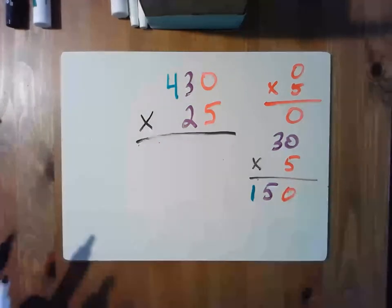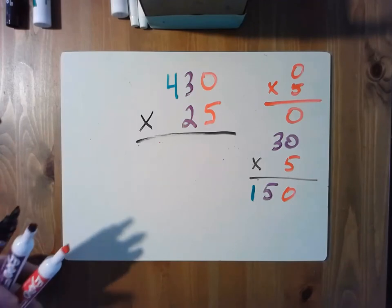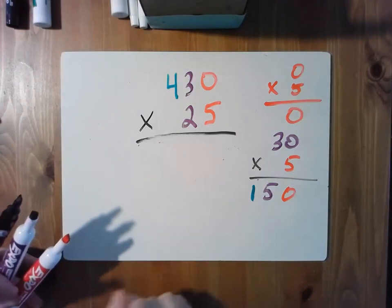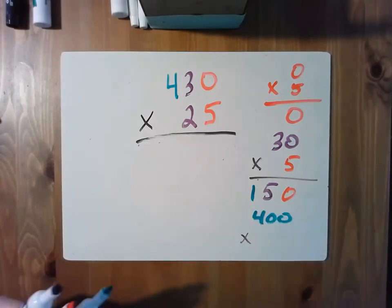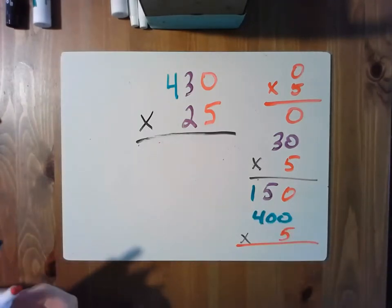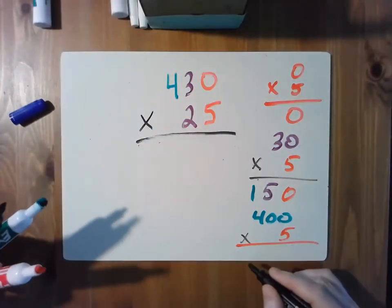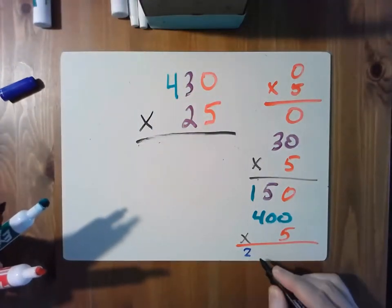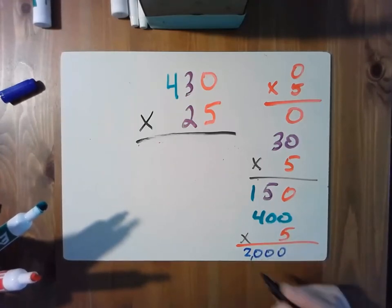Trying to stick with my colors here. I have colored markers that I'm using on the board. And then 400 times 5. So 400 times 5 is 2,000. 4 times 5 is 20 with two zeros. 2,000.